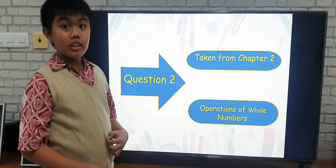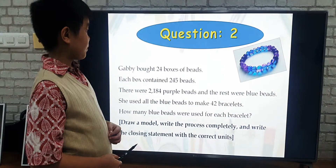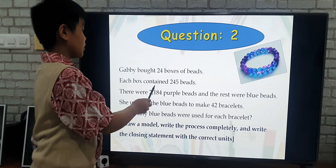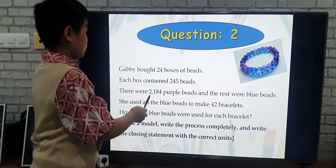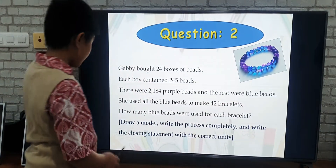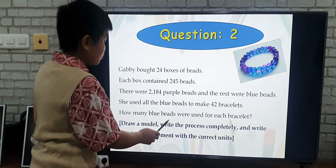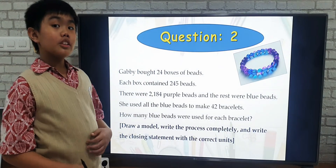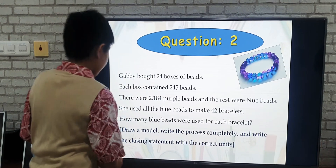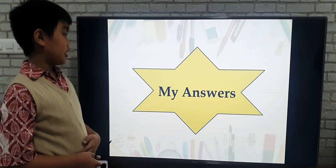Question 2 is taken from chapter 2 about operations of whole numbers. Gabby bought 24 boxes of beads. Each box contained 245 beads. There were 2,184 purple beads and the rest were blue beads. She used all the blue beads to make 42 bracelets. How many blue beads were used for each bracelet? For this question, I must draw a model, write the process completely, and write the closing statement with the answer in it.